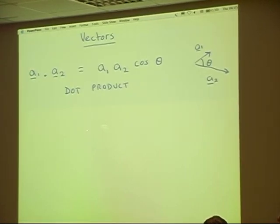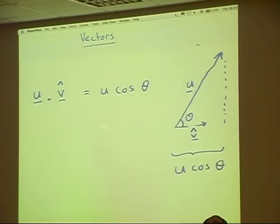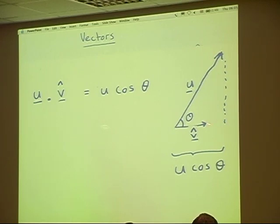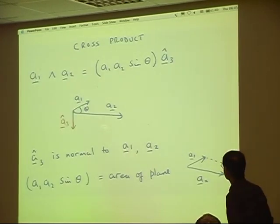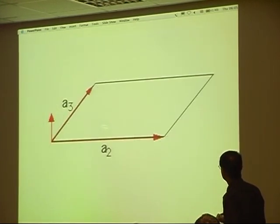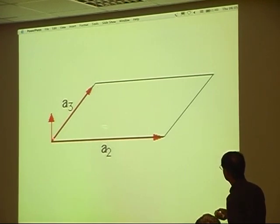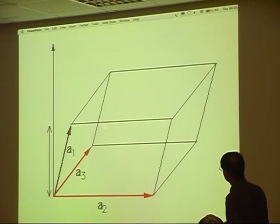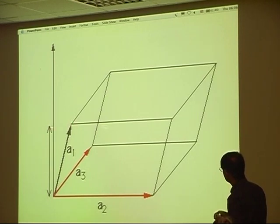To summarize: the dot product represents a projection. If I have a vector u and dot it with a unit vector v-hat, it simply gives me the projection of u along that direction, which is u cosine theta. Similarly, if I take A2 cross A3, I get the vector at 90 degrees to that face whose magnitude is the area of that face, and dotting with A1 gives the height — base times height gives the volume of the cell.